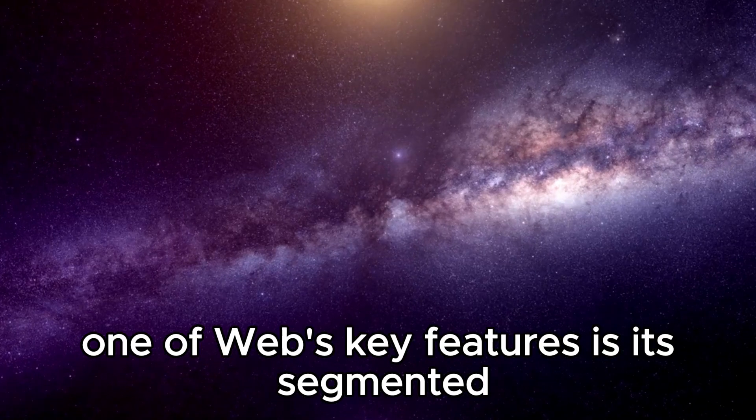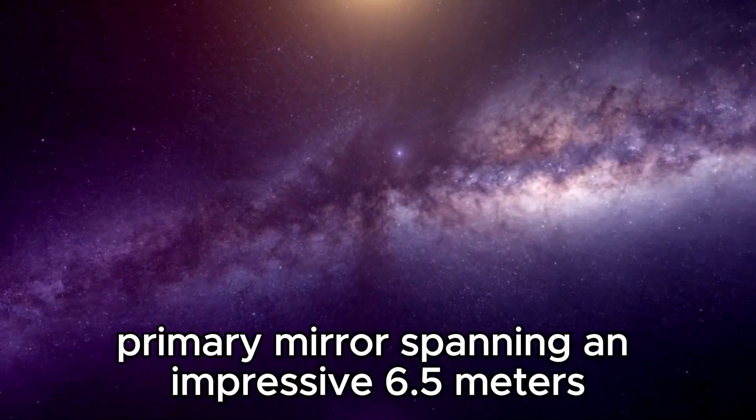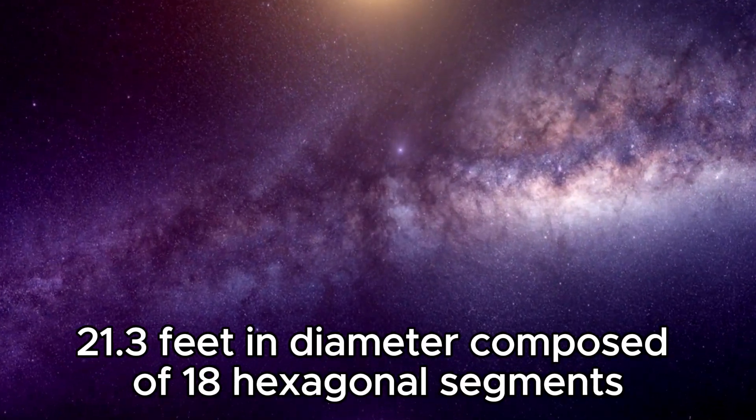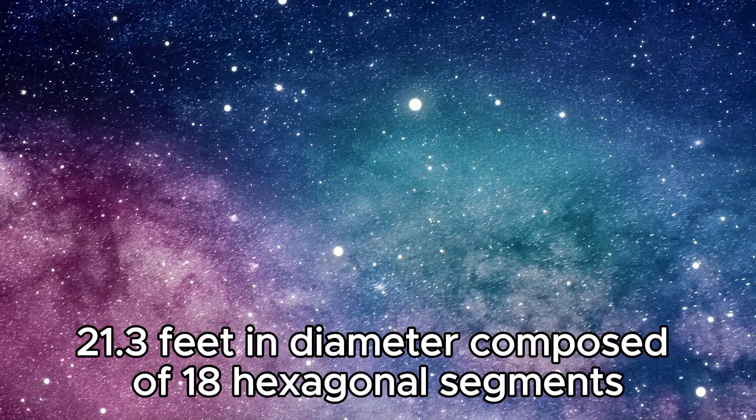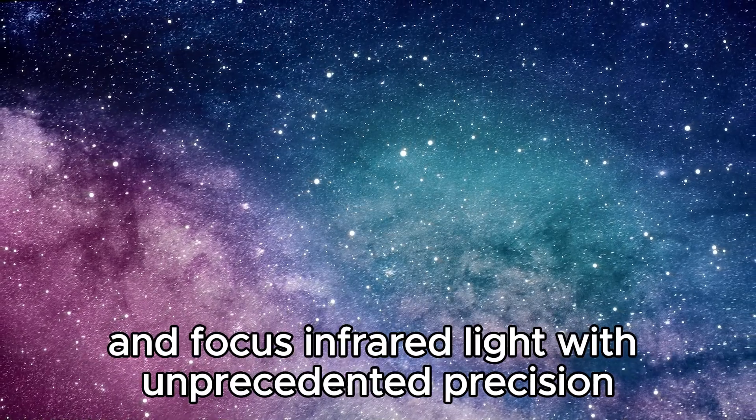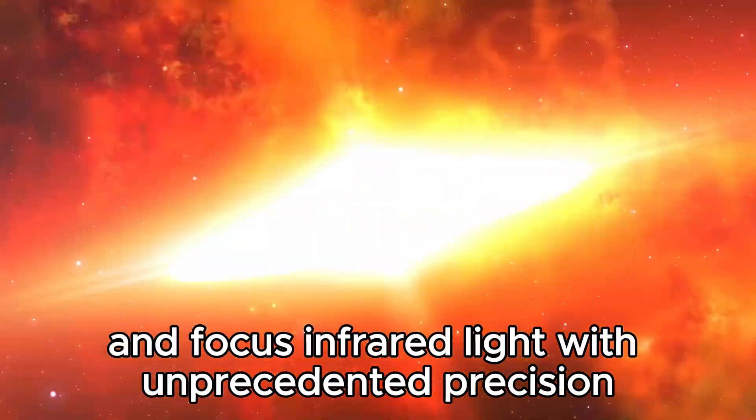One of Webb's key features is its segmented primary mirror spanning an impressive 6.5 meters, 21.3 feet, in diameter. Composed of 18 hexagonal segments, this mirror allows Webb to collect and focus infrared light with unprecedented precision.